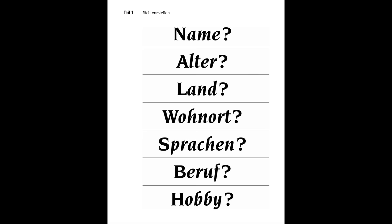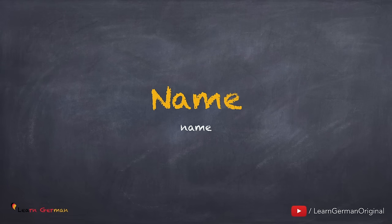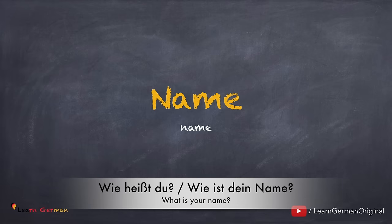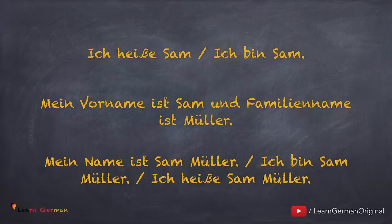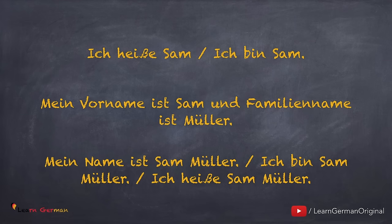With the help of these words you have to talk about yourself. We'll be doing them one by one. Let's begin with the first one: Name. Wie heißt du? Wie ist dein Name? Ich heiße Sam, oder ich bin Sam. Das ist einfach. Du kannst auch sagen: mein Vorname ist Sam und mein Familienname ist Müller, oder mein Name ist Sam Müller, oder ich bin Sam Müller, oder ich heiße Sam Müller.